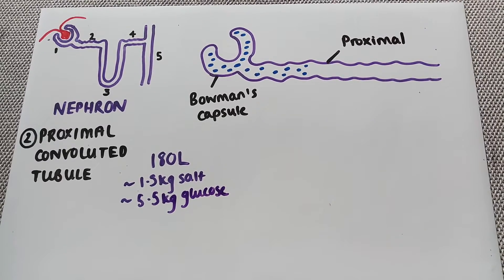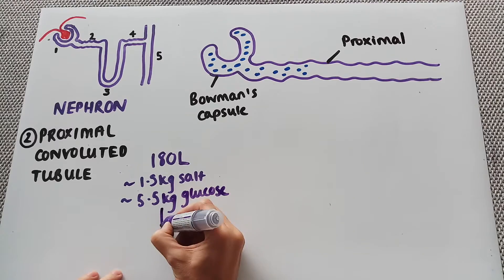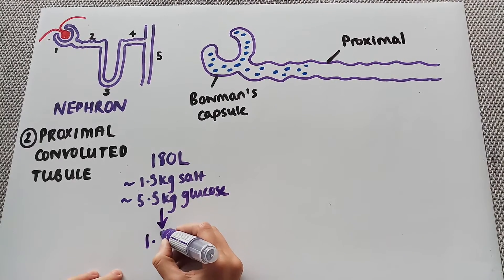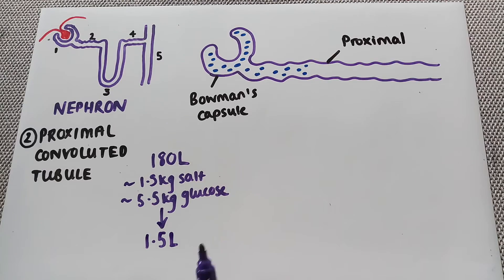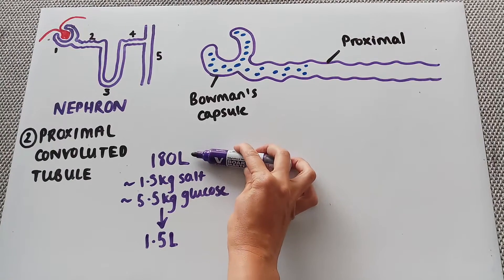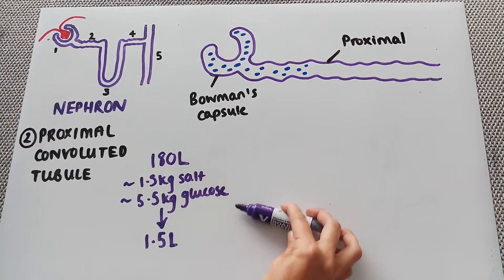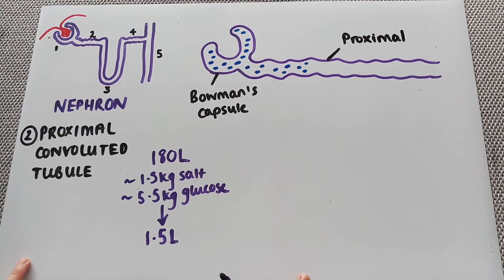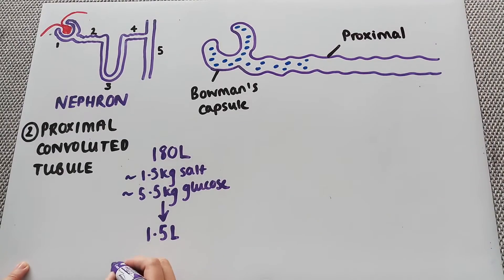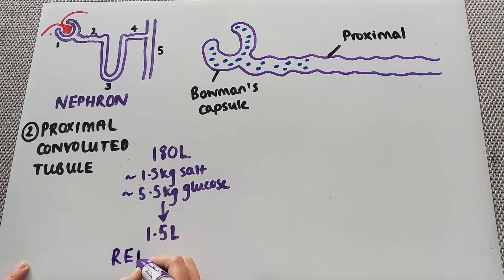Now, what you actually produce in a day — so the average adult human — actually only produces 1.5 litres of urine per day. So the role of your nephron, and mainly the proximal convoluted tubule, is to turn this 180 litres into this 1.5 litres. So the main thing that happens in this area is reabsorption.